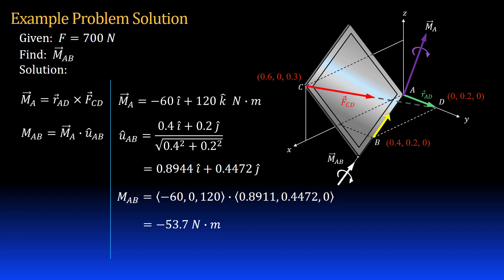I can get my answer, the moment about AB in Cartesian notation, by multiplying the magnitude of M_AB times the unit vector u_AB. I get vector M_AB is negative 48i plus 24j newton meters.